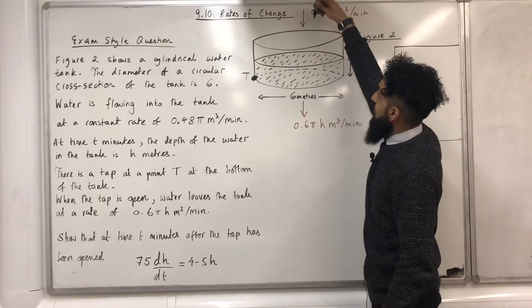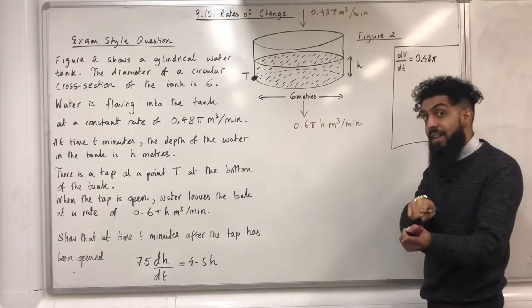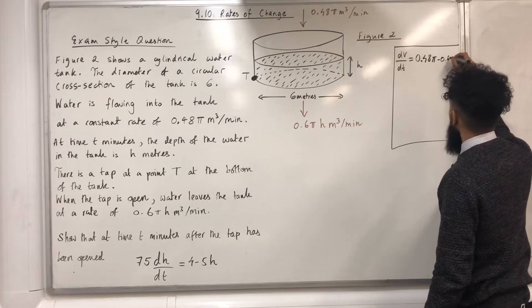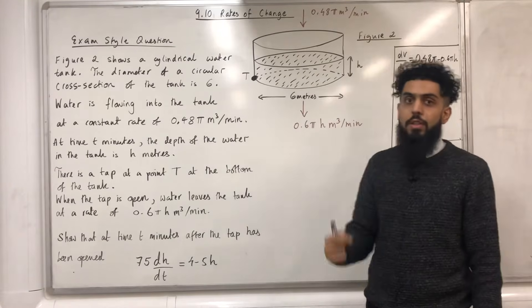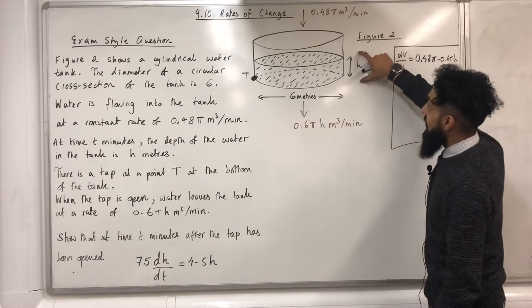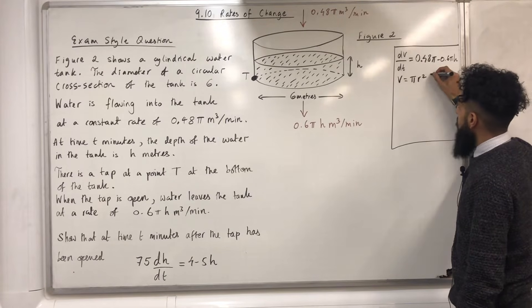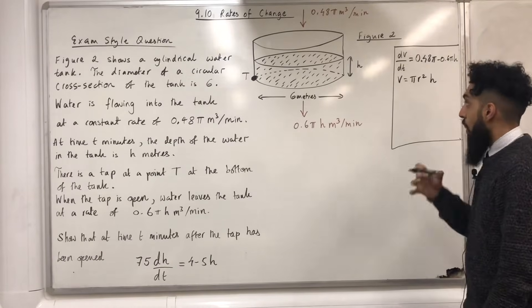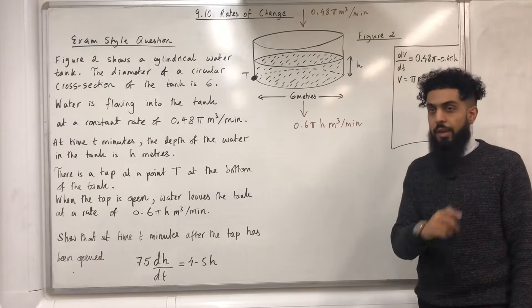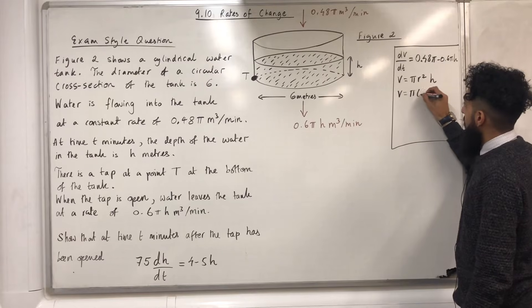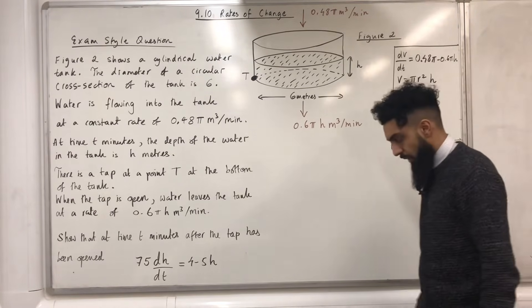I'll extract the key information. dv over dt equals 0.48 pi minus 0.6 pi h (water in minus water out). I also know how to work out the volume of water at depth h: V equals pi r squared times h. The diameter is 6 meters so the radius is 3, giving V equals pi times 3 squared times h, which simplifies to V equals 9 pi h. My target is to find dh over dt.